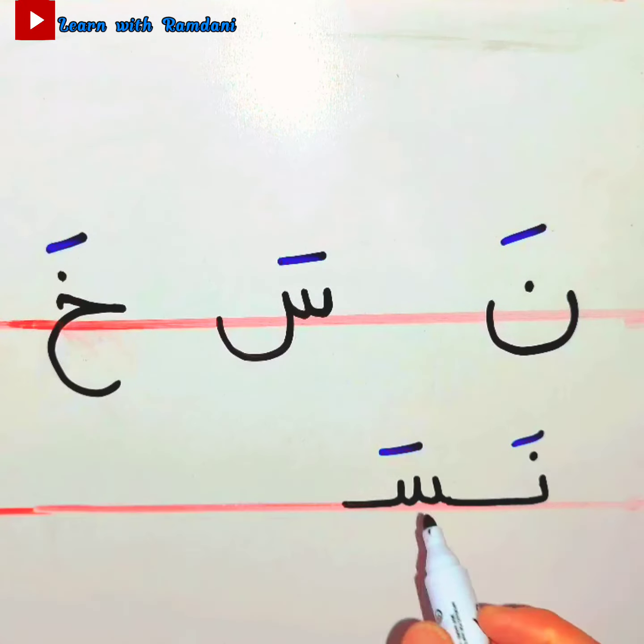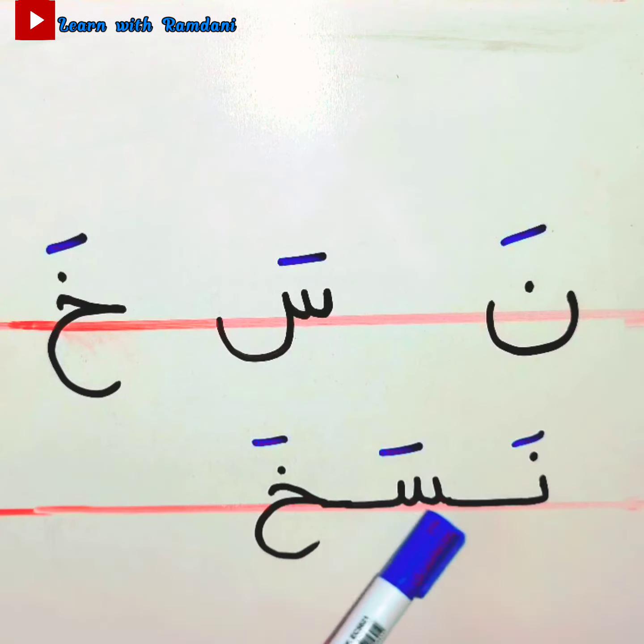And then the letter Khaa. We'll put fatha: Sa, kha. Nasa-kha, na-sa-kha.